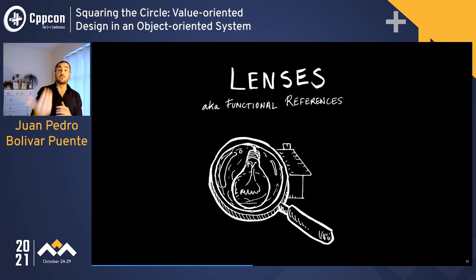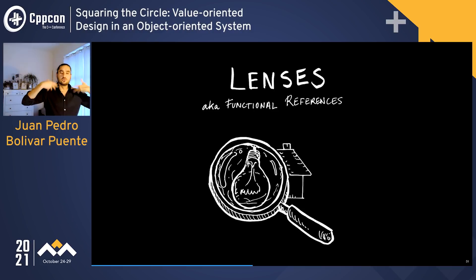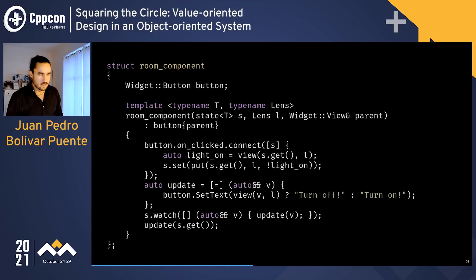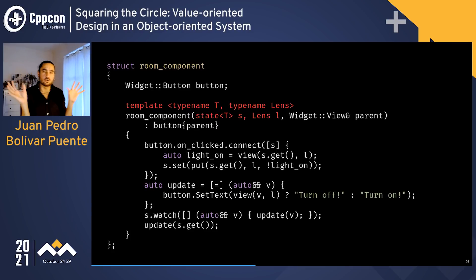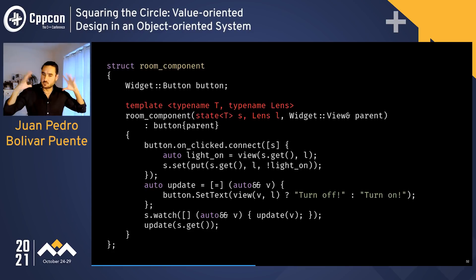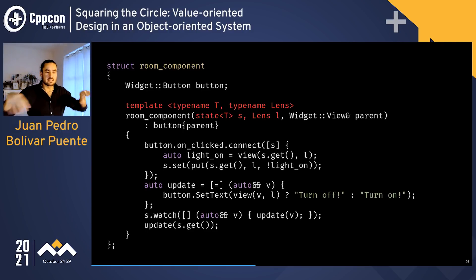To the rescue: lenses — a functional programming tool, often called 'functional references.' They allow you to zoom into a little part of a data structure bi-directionally. Looking through one end, you get the light-on state of the house. Looking from the other end, you give it a light-on state and it produces a new house with that state set. With this API, the room component becomes a template — it no longer needs to know about the house.